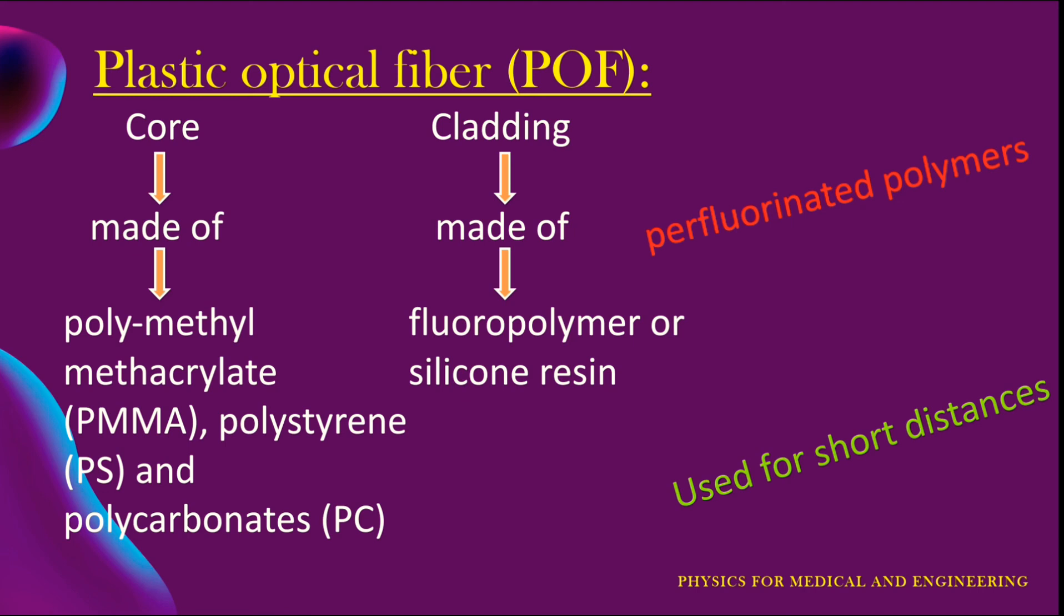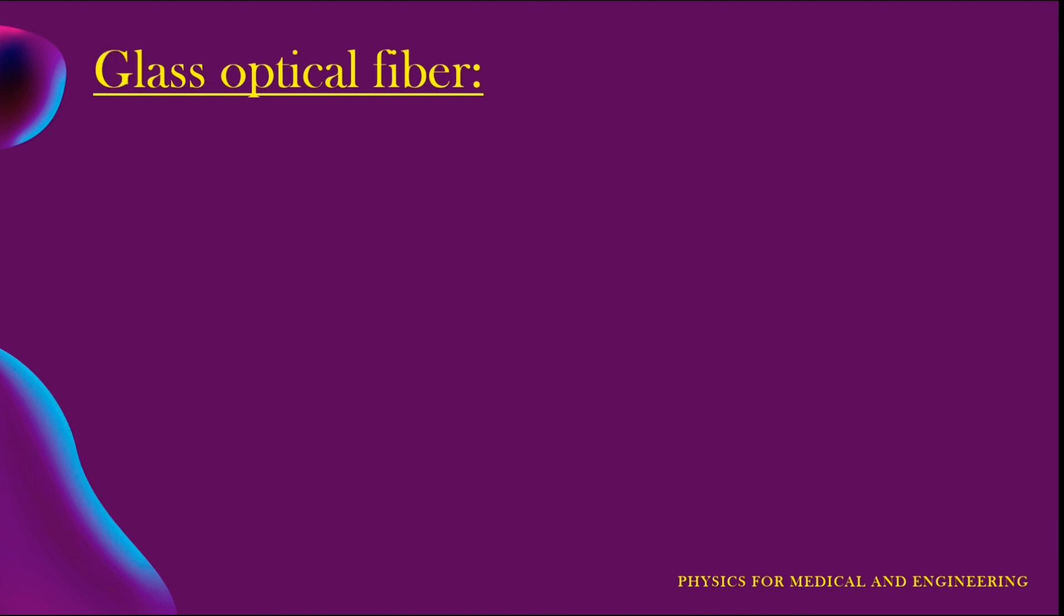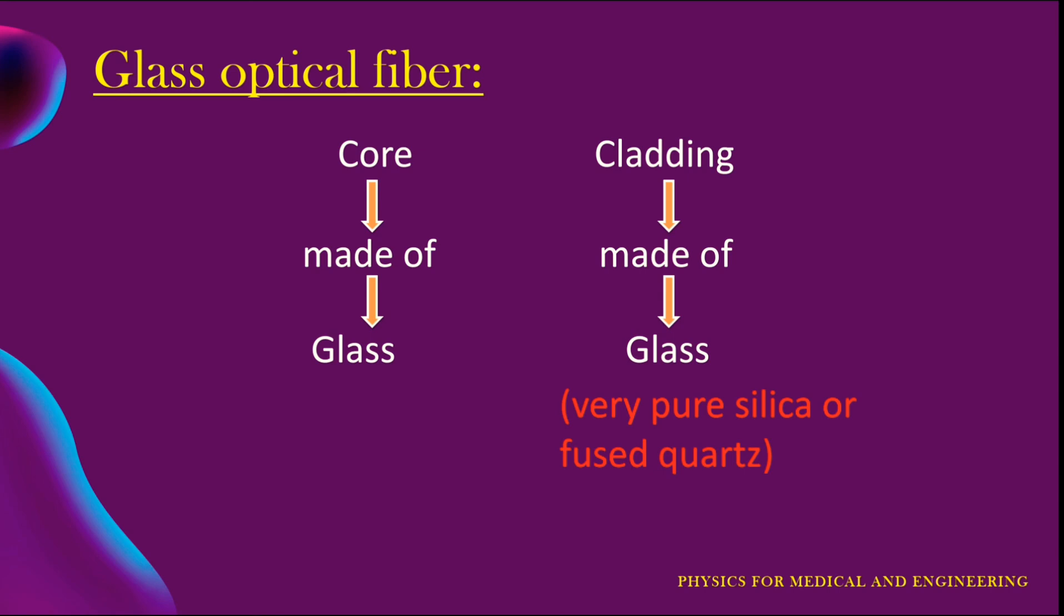The next one is glass optical fiber. Glass optical fibers are made of glass core and glass cladding. The cladding is usually made of very pure silica or fused quartz while the core is usually silica doped with germanium or phosphorus to increase the refractive index.